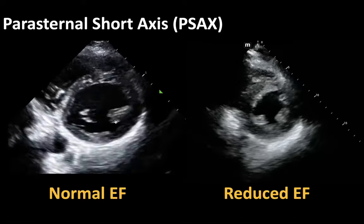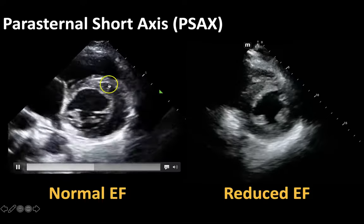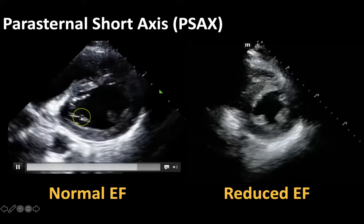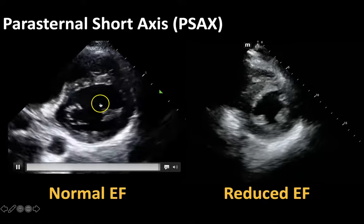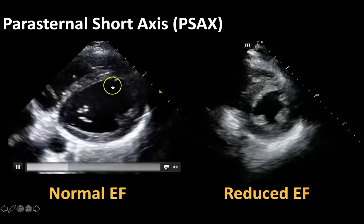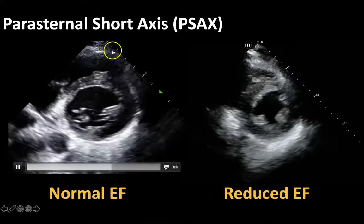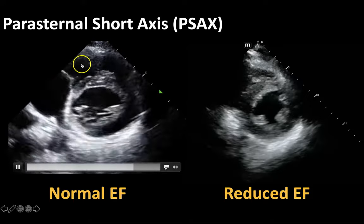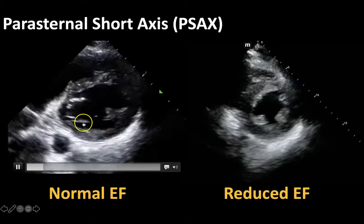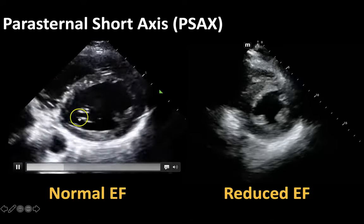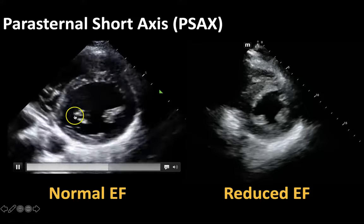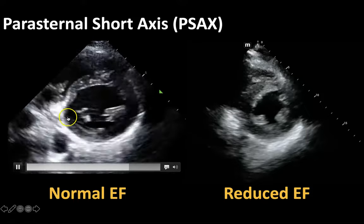So now we're cutting across the heart in a short axis. This is nice because we're seeing the left ventricle right here nice and big, and the right ventricle right here. This is at the level of the papillary muscles, which is what you're seeing here right near the mitral valve.